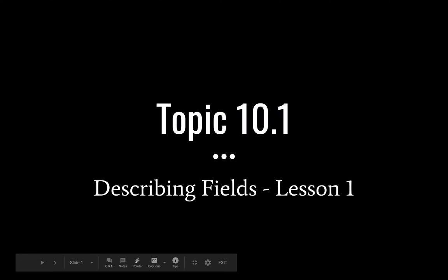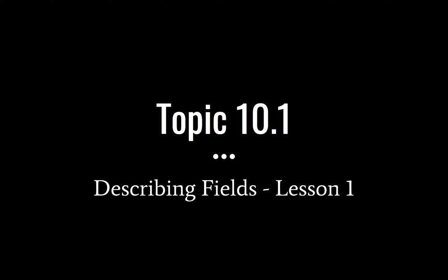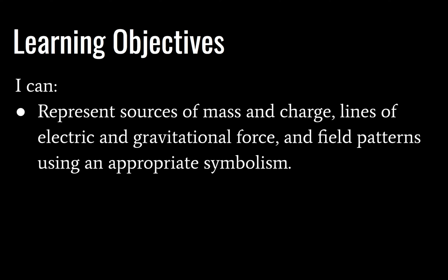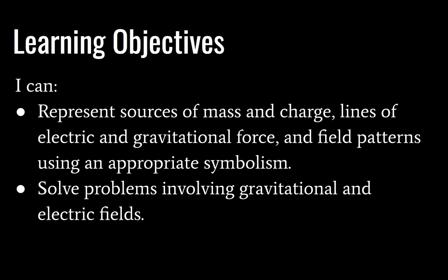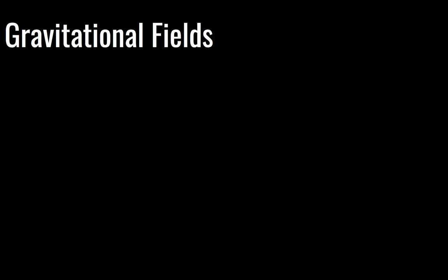Hey guys, it is Mr. Van Loo and I'm going to give you a quick lecture on topic 10.1. I've broken topic 10.1 into two lessons. The first lesson has the following learning objectives. First, you will be able to represent sources of mass and charge as well as lines of electric and gravitational force and field patterns using appropriate symbolism. Second, you will be able to solve problems involving gravitational and electric fields, and this will of course involve a handout.